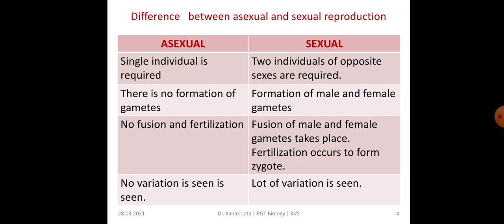Here is the difference between asexual and sexual reproduction. In asexual reproduction, a single individual is required, whereas in sexual reproduction, two individuals of opposite sexes are required — one male and one female. In asexual reproduction, there is no formation of gametes, but in sexual reproduction, there is formation of male and female gametes. In asexual reproduction, there is no fusion or fertilization, whereas in sexual reproduction, fusion of male and female gametes results in fertilization which forms the zygote. In asexual reproduction no variation is seen, but in sexual reproduction, a lot of variation is seen because two parents of opposite sexes are required.